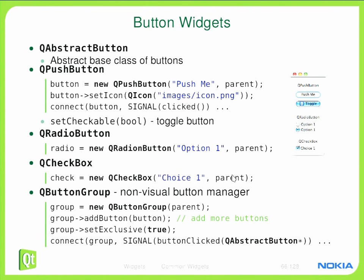In the screenshot you can see two radio buttons with labels Option1 and Option2. QRadioButton can be created by instantiating QRadioButton on the heap, passing the label string and the parent as parameters. At the bottom you can see a single QCheckBox with the label 'choice1'. A QCheckBox is created using new QCheckBox, passing 'choice1' as the string and the parent as the last parameter.